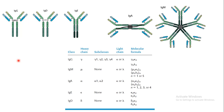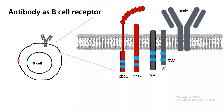Antibodies are the receptors for B cells. In that situation, they are known as membrane-bound IgM or membrane-bound IgD. In that case, you have an antibody along with an Ig-alpha and Ig-beta domain, which has immunoreceptor tyrosine kinase activity, giving rise to further B cell signaling.